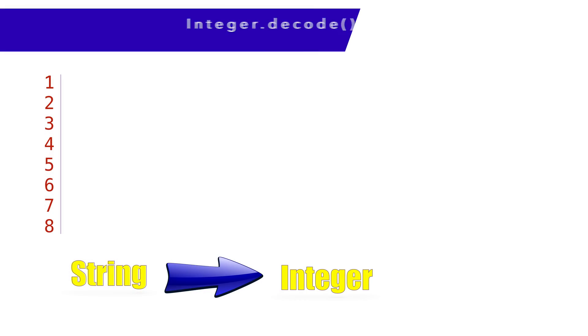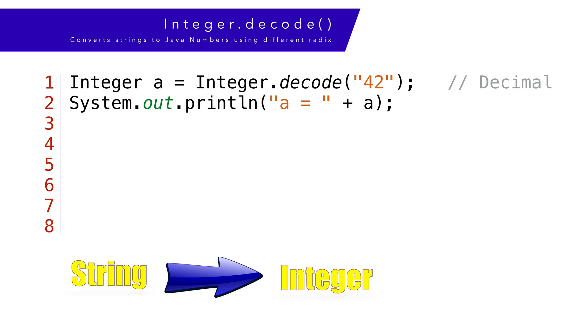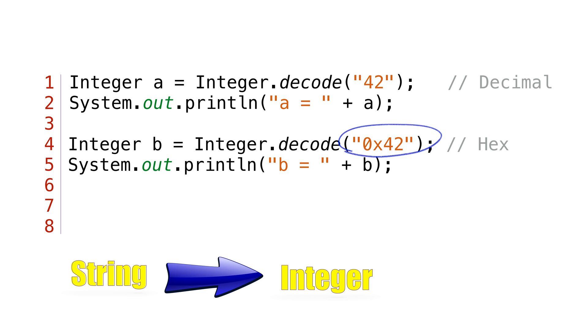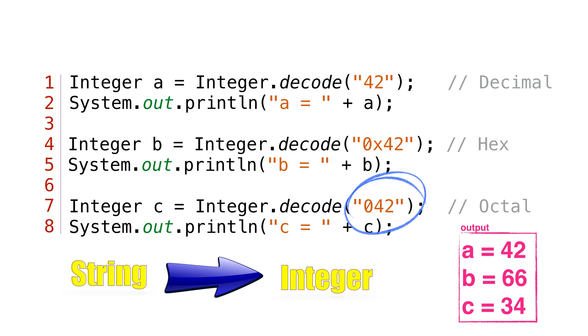The decode method takes any number string based on any radix and converts it to an Integer instance. In order to determine the correct radix to use, decode expects the string to be formatted in a special way. If the number is a decimal, you can just use the number with no special formatting. However, if the number is a hexadecimal number, the number must start with 0x, 0X, or the pound sign. If the number is octal, it needs to start with a zero. The decode method can handle numbers with a radix of 8, 10, or 16. So what do we use if we have something else, like a binary number?